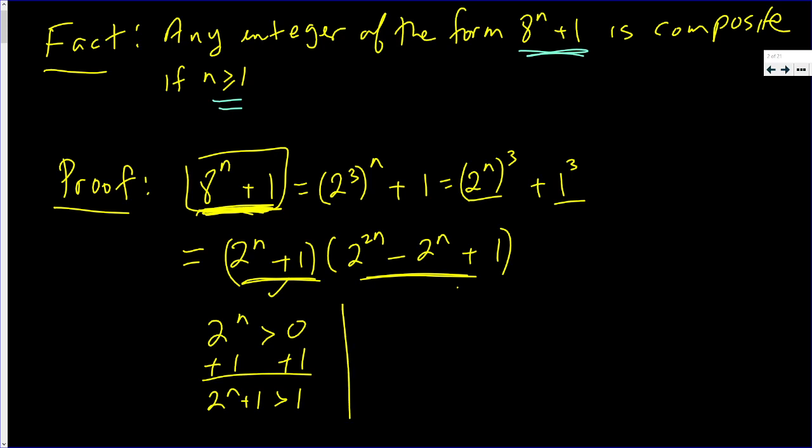Now we need to show that this second factor is also not equal to 1. 2n is some integer because n is an integer. 2 to an integer is an integer, and 1 is clearly an integer. When you add and subtract integers, you get an integer. So this second factor is an integer.